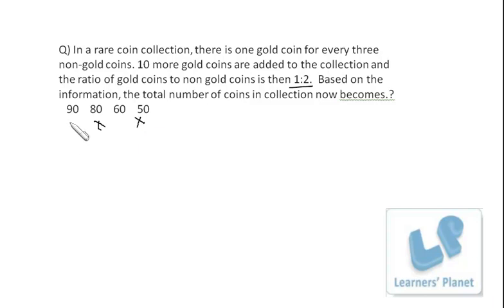So if I take option as 90, it must be 60, and 1 is to 2, so it must be 30 and 60. That is the present collection, gold and non-gold. Now if I wish to cross verify, I deduct 10 from it, so initially 20 golds were there and 60 non-golds were there, so the ratio is 1 is to 3. So with this way we can verify the answer, no need to go for much calculations.